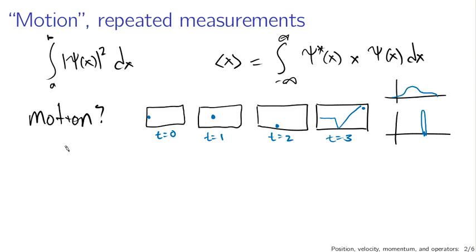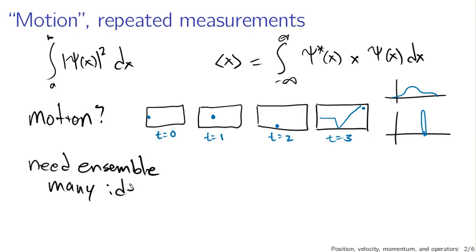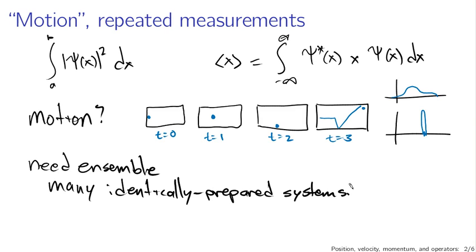What we really need is an ensemble — that's the technical term. What an ensemble means in this context is that you have many identically prepared systems. If I had many identically prepared systems, I could measure the position over and over again, once per system. If I have 100 systems, I could measure the position 100 times, and that would give me a pretty good feel for what the probability density for position measurements is at the particular time when I'm making those measurements.